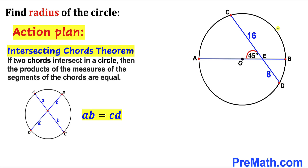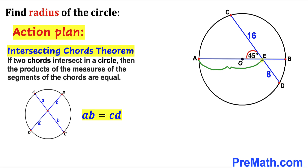Now we are going to apply the very same theorem in our case. We can see we have two chords AB and CD intersecting each other, where one segment is 16 and the other is 8. The other two segments are going to be AE and EB, and our task is to find the value of segment AE and segment EB as well.